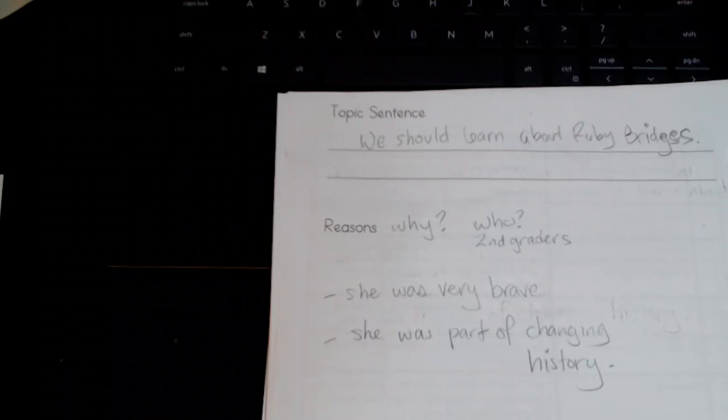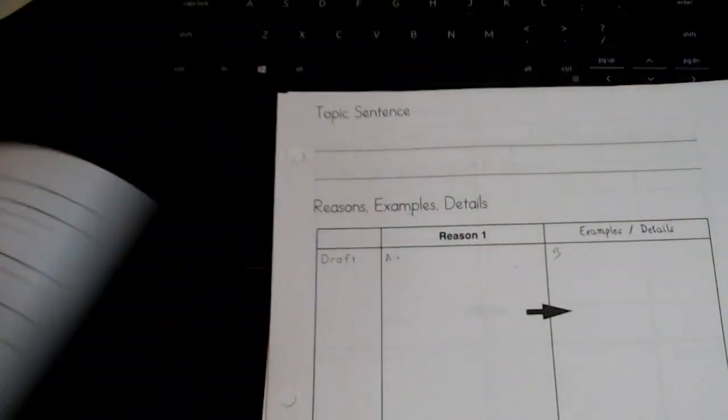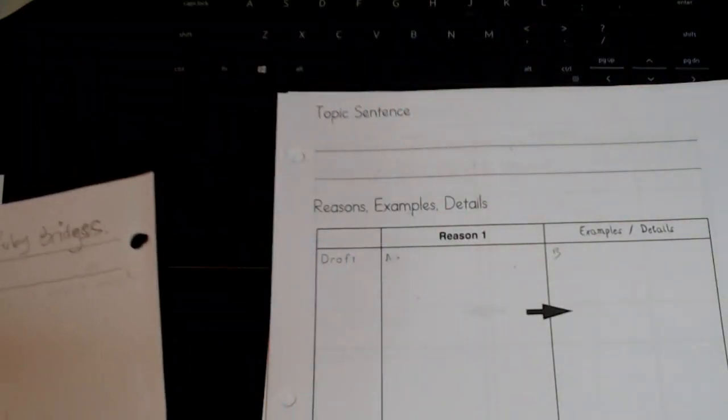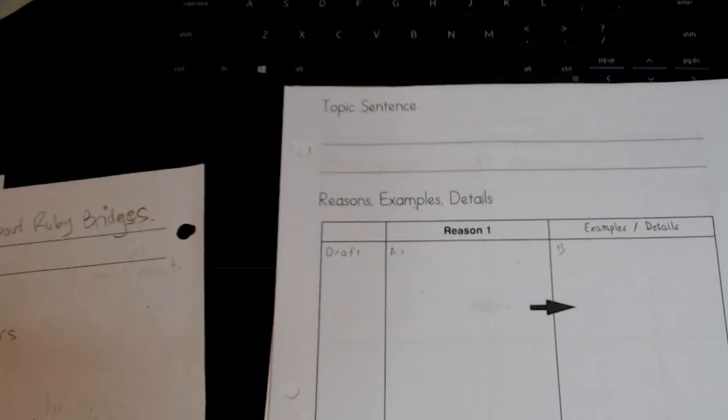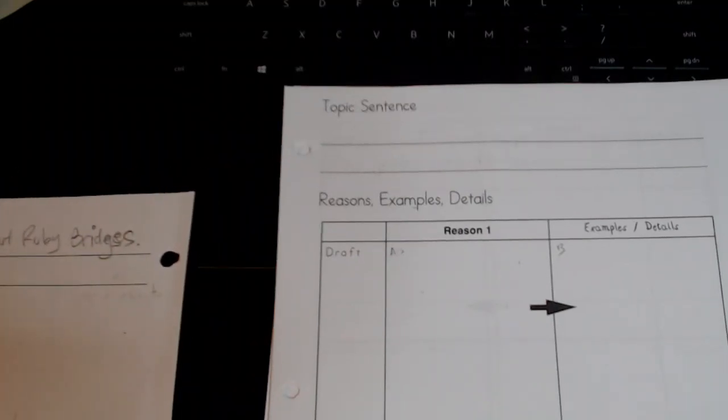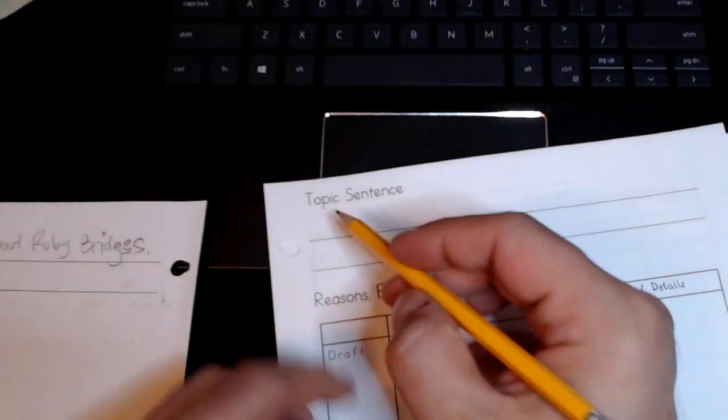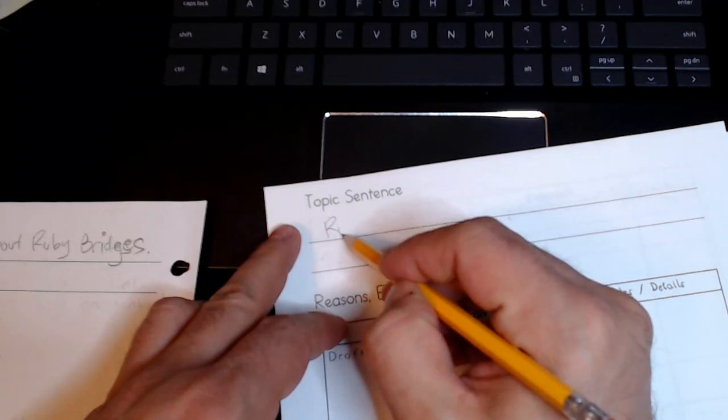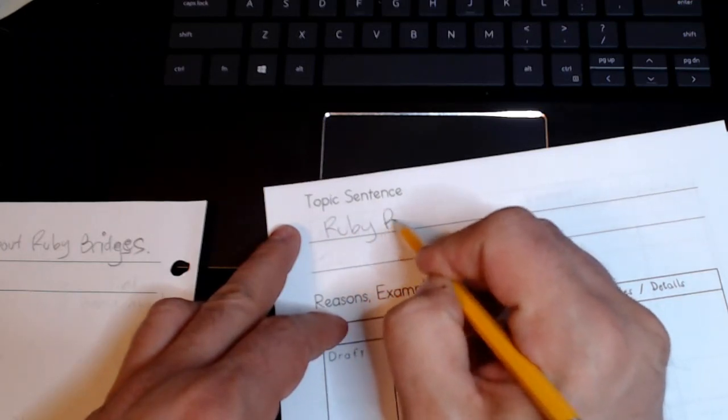Why don't we go ahead and move to page 25. The very top where it says topic sentence. That's where I'm going to write a much stronger topic sentence. Because we're writing about a person we want to make them the focus. So a good idea might be to start off with the name of our subject. In this case Ruby Bridges.